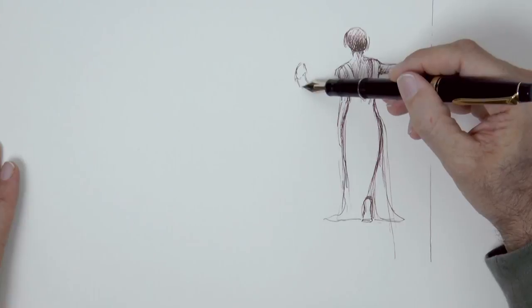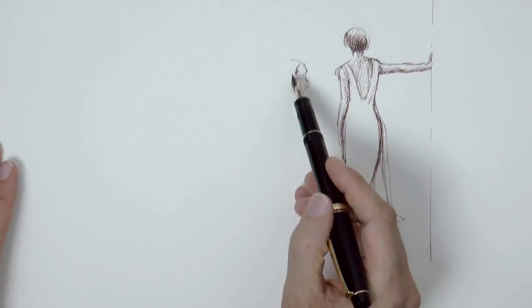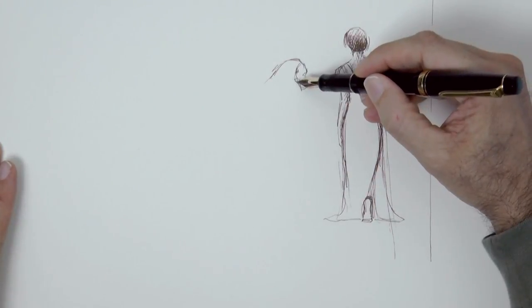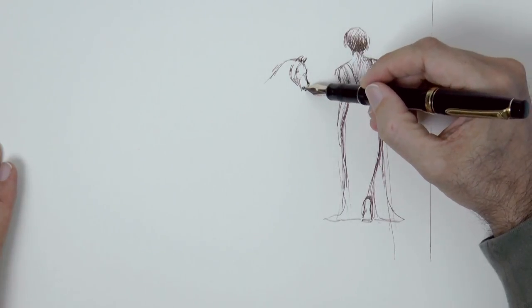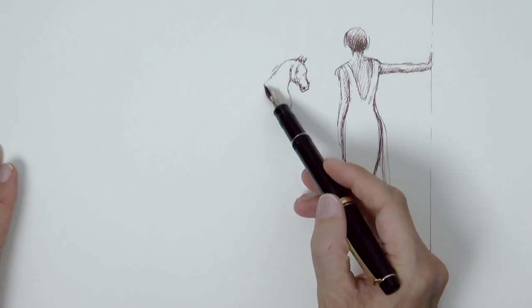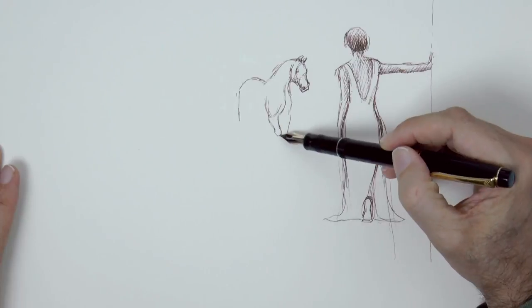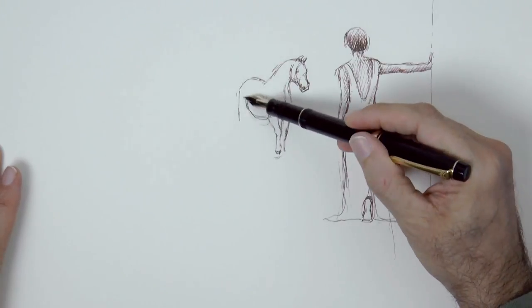And we start the horse. I begin with a line of the head and the eye, then the snout, the neck and the big rounded bone of the jaw, the big nostrils, then the body and the legs.